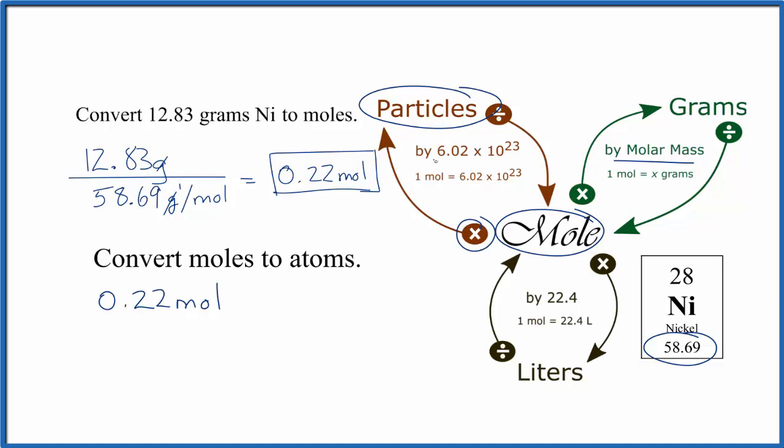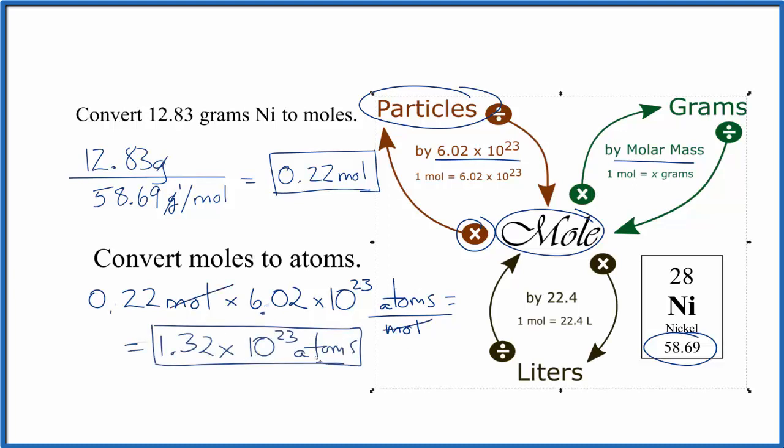We're going to multiply by Avogadro's number. That'll look like this. Remember one mole is 6.02 times 10 to the 23rd atoms. So that's atoms per mole. When we multiply the top and then divide by the bottom, moles cancels out. We're left with 1.32 times 10 to the 23rd atoms of nickel.